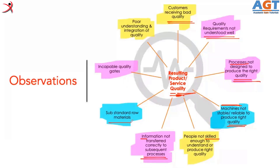Then there are substandard raw materials. And incapable quality gates — meaning the inspection checkpoints such as inline checking, end-line checking, fabric checking, trims checking, and AQL. There are several inspection points where quality checks happen, or the operator itself is inspecting. Incapable means they are not capable enough to understand what needs to be checked, how it needs to be checked, or whether the checking has been done correctly.